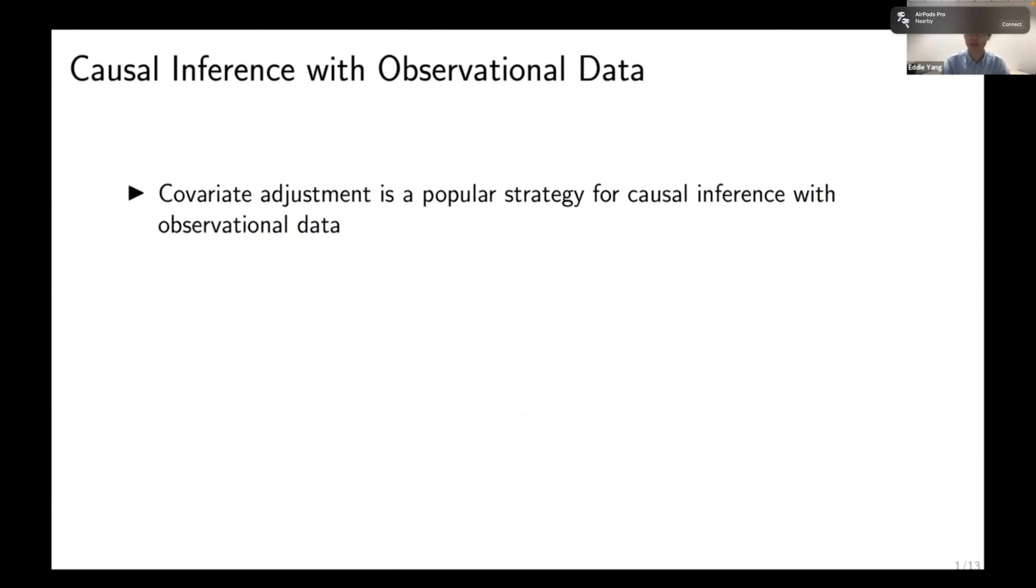With observational data, we often have to make covariate adjustments in order to make causal claims about our estimated quantities. And for this project, we consider covariate adjustments in cross-sectional settings with binary treatments.